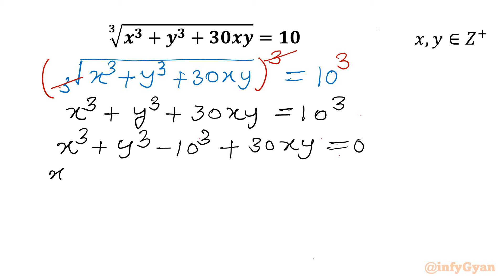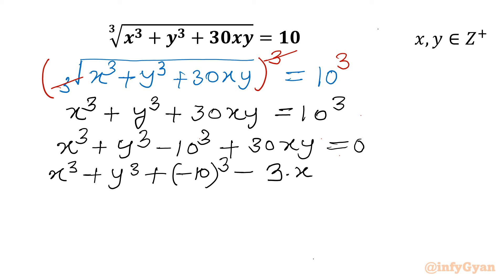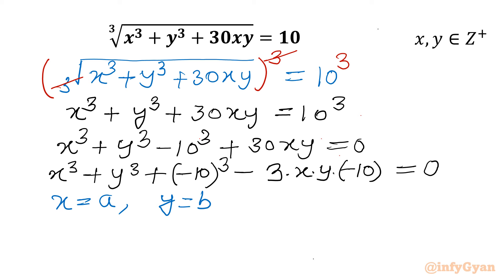Now I will use a manipulation: x³ + y³ + (-10)³, and this 30xy we can write as -3 · x · y · (-10) = 0. Now if I plug in x = a, y = b, and -10 = c, then we will have one algebraic identity.